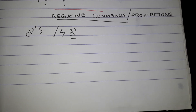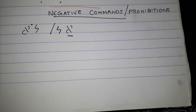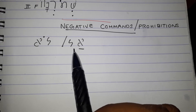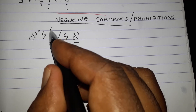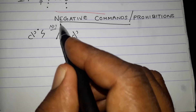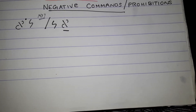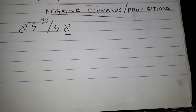Today we are going to look at the negative commands or prohibitions in Hebrew. Two basic words we use for negative commands or prohibitions are 'al' or 'lo', meaning 'not'. In Hebrew we use these two terms for negative commands — one is for a permanent prohibition.